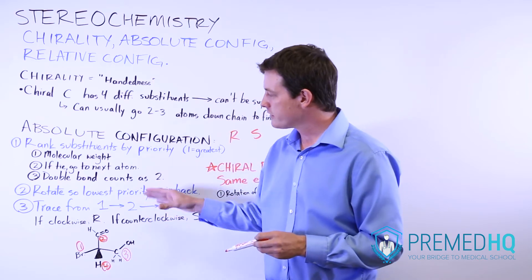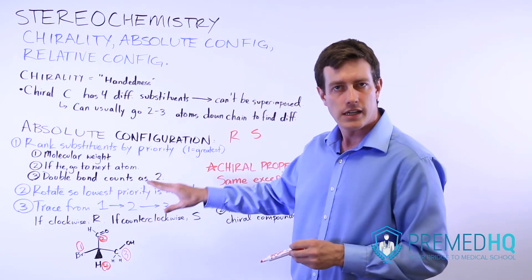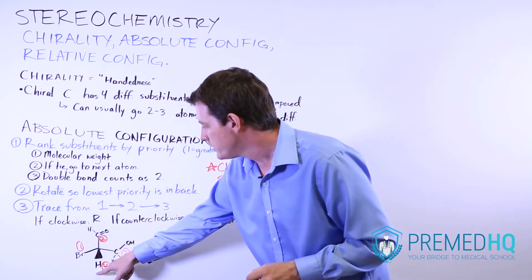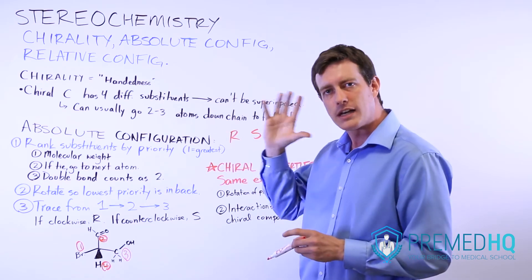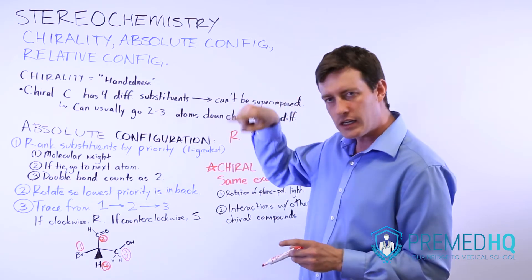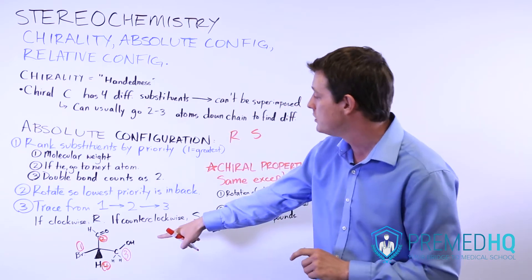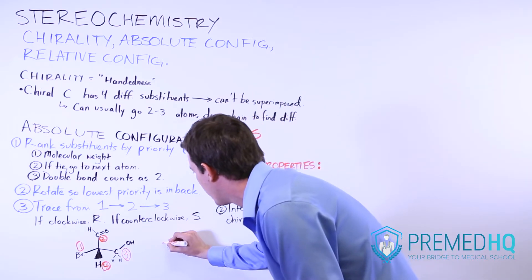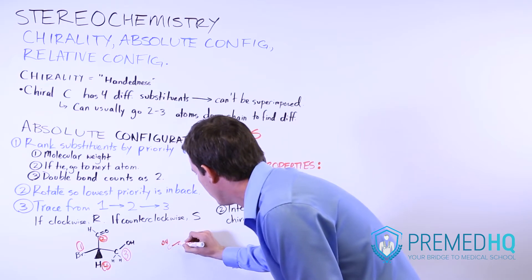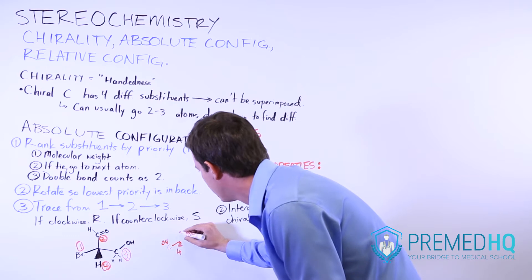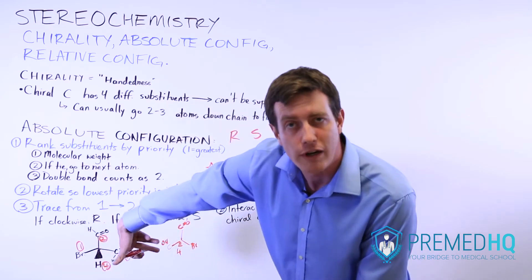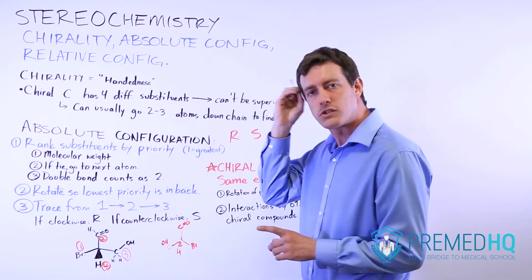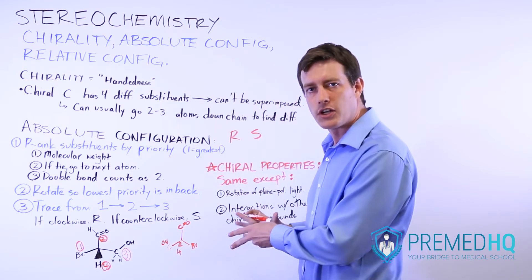The next thing you do is rotate the compound so that the lowest priority substituent is in the back — facing away from you. You can do this spatially and envision rotating the compound in your head. If we do that, we end up with the COH group on one side, the hydrogen now facing away from us, the C double-bonded to O group, and the bromine. Just imagine twisting it around so that the hydrogen is facing away from us.